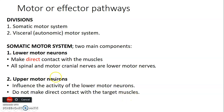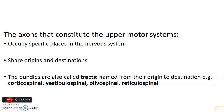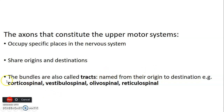The axons that form the upper motor system occupy specific places in the nervous system and share an origin and destination. A collection of myelinated axons forms tracts, and tracts are named from origin to destination. For example: corticospinal, from cerebral cortex to spinal cord; vestibulospinal, from vestibular nuclei to spinal cord; olivospinal, from olivary nuclei to spinal cord; and reticulospinal, from reticular formation to spinal cord.